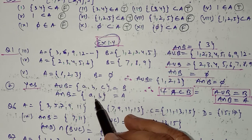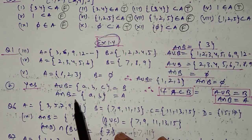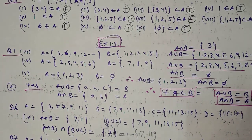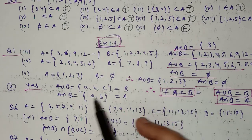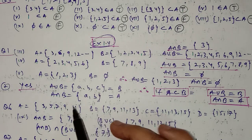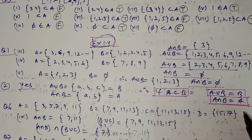In question number 2, set A contains {a, b} and set B contains {a, b, c}. It is asked whether A is a subset of B. Yes, A is a subset of B because all elements of A belong to B. The union of A and B is {a, b, c}, which equals B. So if A is a subset of B, then A union B equals B. Furthermore, the intersection is {a, b}, which equals A. So if A is a subset of B, then A intersection B equals A.